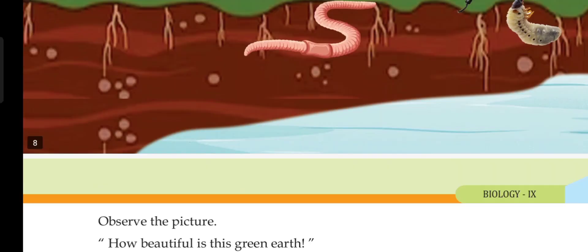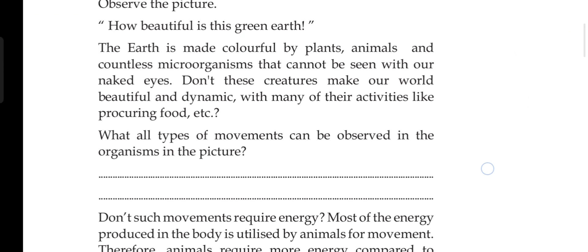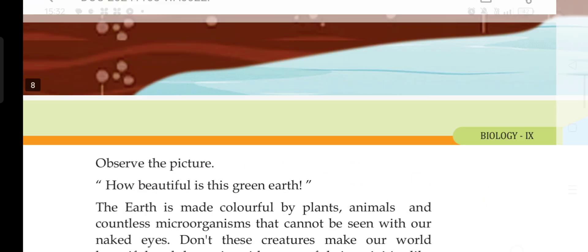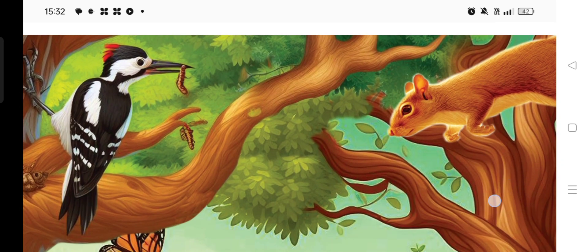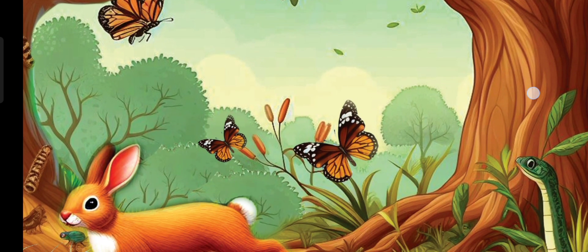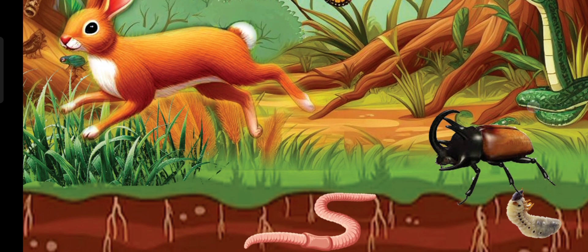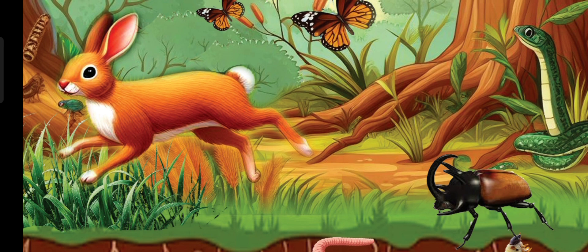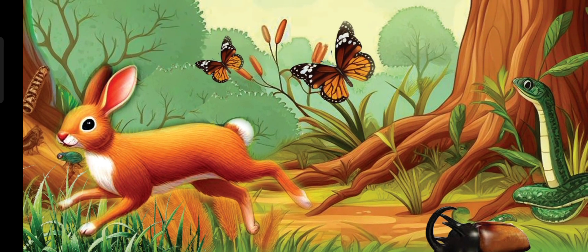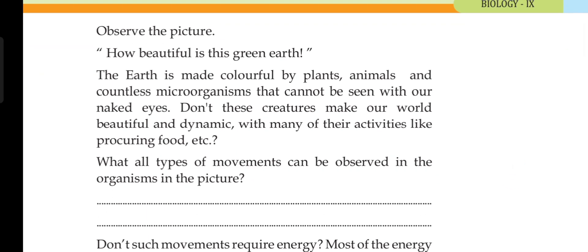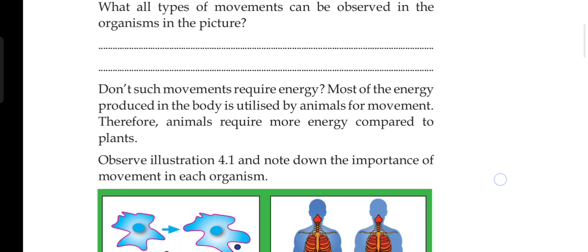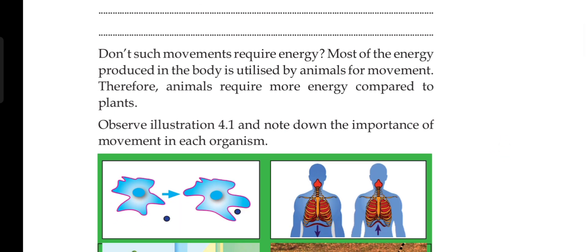We are going to show you a picture. We are going to show you movements — a picture of butterflies and wings, and a lot of animals and organisms. The earth is made colorful by plants, animals and countless microorganisms that cannot be seen with our naked eyes. What are all types of movements?